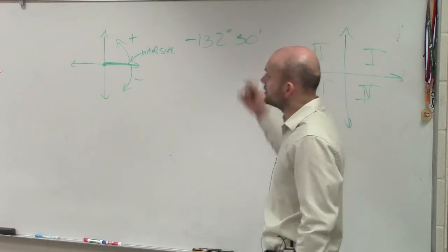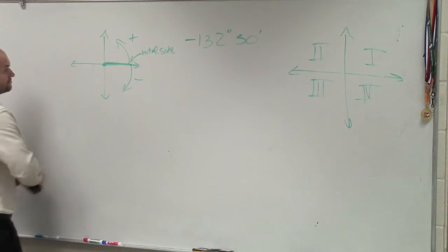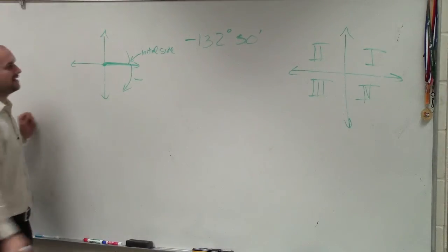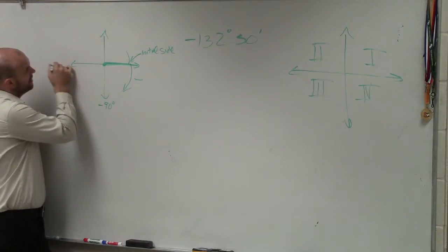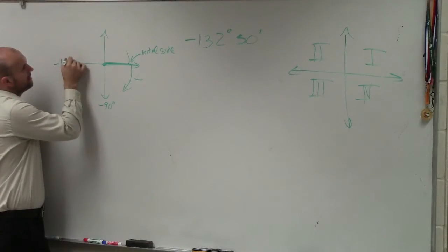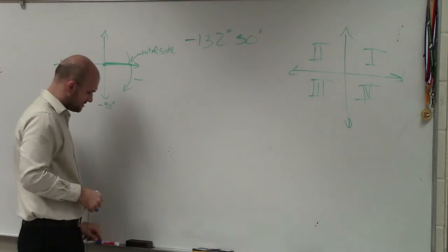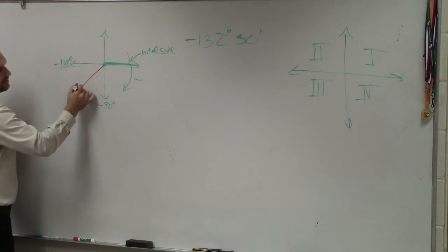So we have negative 132 degrees. That means we're going in the negative direction. Remember, this would be negative 90 degrees in the negative direction, and this would be negative 180 degrees. So if I was going to graph this, I know that it's obviously going to be somewhere right around in here.